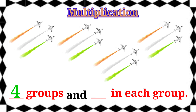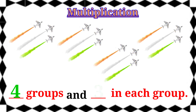Let's write the number 4. Now we are going to count how many in each group. 1, 2, 3. Here 3 in each group. So let's write the number 3. Therefore, the answer is 4 groups and 3 in each group.